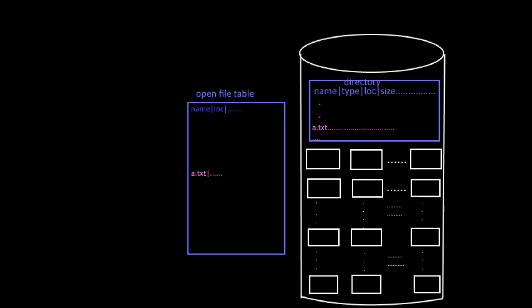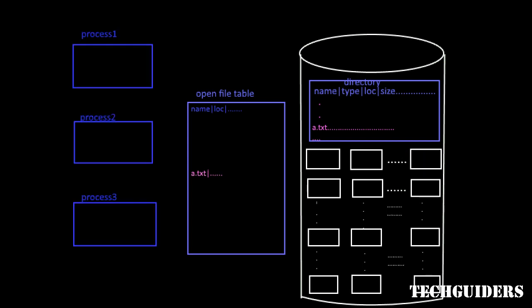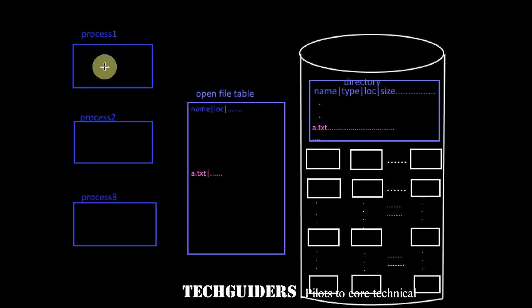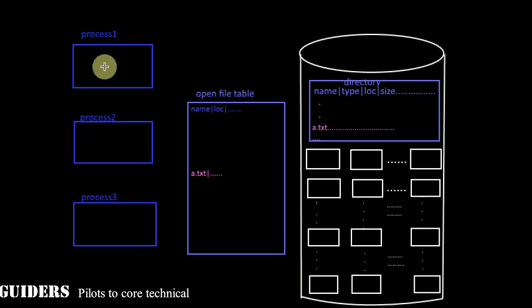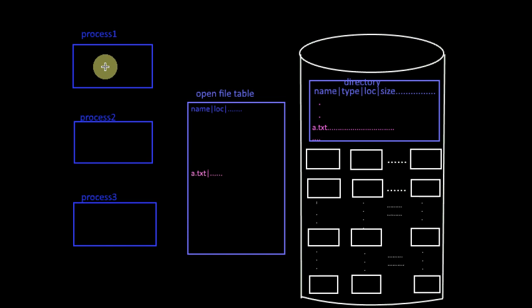The same file can be used by many processes at the same time, and there can be certain process-specific information such as the current file position pointer. This pointer will point to the location at which the next read or write should take place in a particular file, and it differs for each process.